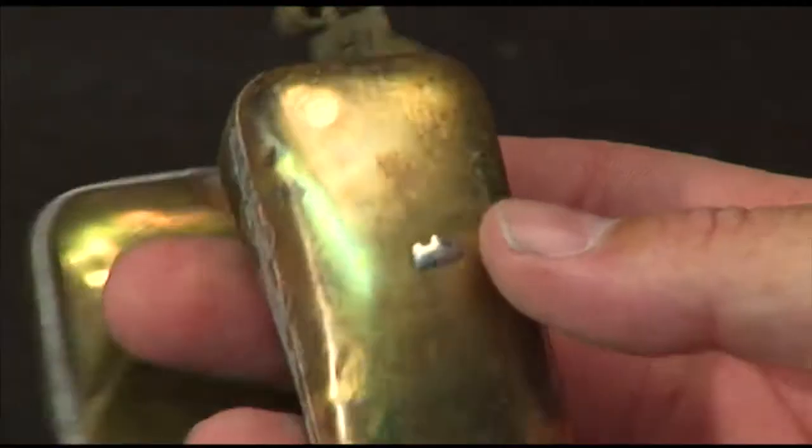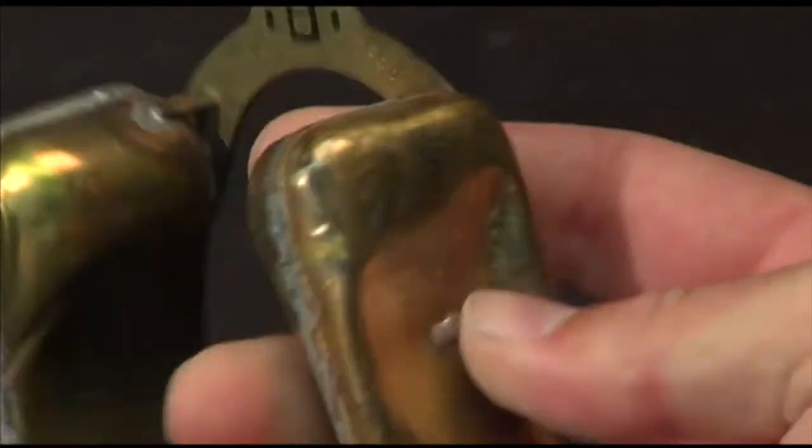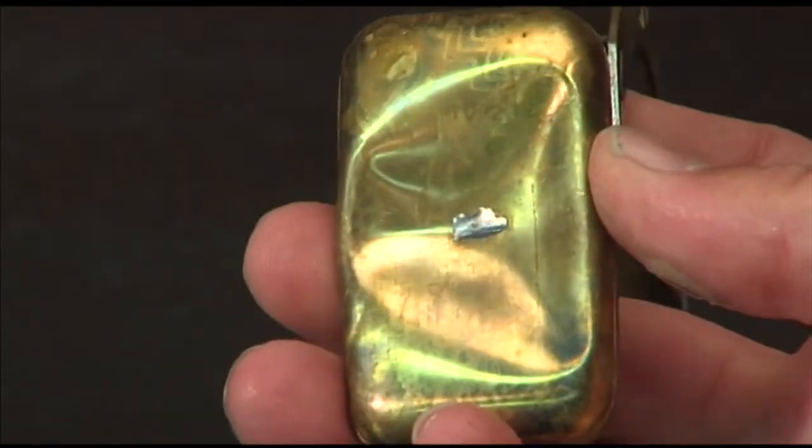Hollow brass floats followed around the time of World War I. Their eggshell thin half pontoons were soldered together. Then the pontoons were soldered to brass frames.